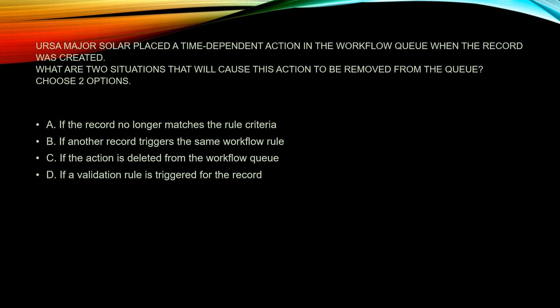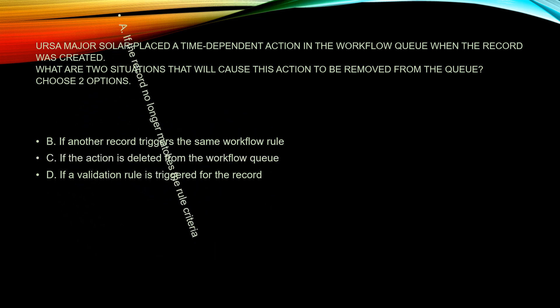C: If the action is deleted from the workflow queue — yeah, if you change the actions in the workflow queue, the original record may not meet those criteria, so that would be a good answer. And D: if the validation rule is triggered for the record — the validation rule could be like 'you must have a date to save it.' Does that change the workflow queue? No, absolutely not. So I'm going with A and C, and we are correct.